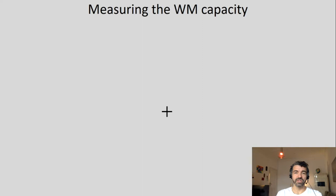I want to show this as a demonstration — a task you can do yourself. Look at the fixation cross; there will be a number of colored squares presented and you are supposed to remember them. First these items will be shown, they will disappear for a short period of time, and then they will reappear with or without a change. Your task is to say whether one of the squares has changed or not.